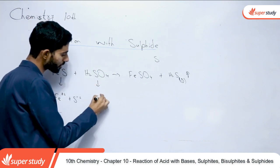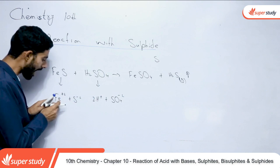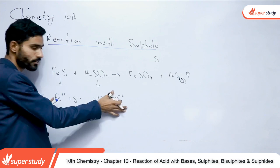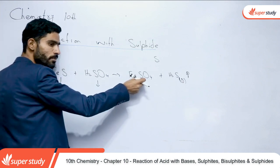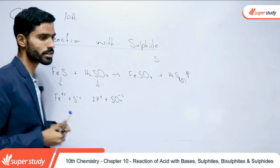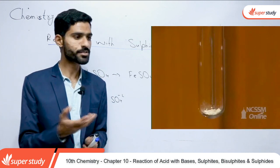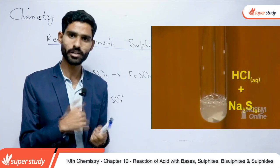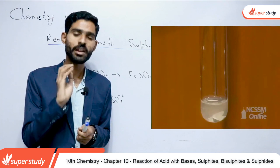Iron sulfide ko sulfuric acid ke saath react karne par iron sulfate (salt) aur H₂S gas banti hai, jo gaseous form mein evolve ho jati hai — effervescence ki form mein nahi, gas ki form mein. Iron sulfide ionize hone par Fe²⁺ aur S²⁻ deta hai. Sulfuric acid 2H⁺ aur SO₄²⁻ deta hai. S²⁻ ions H⁺ ions se milkar H₂S gas banate hain. Bacha hua Fe²⁺ aur SO₄²⁻ milkar iron sulfate (FeSO₄) banate hain.